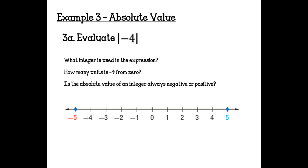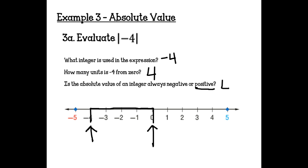Example 3: Evaluate the absolute value of negative 4. The integer used is negative 4. To find how many units negative 4 is from 0, we can graph it. Negative 4 is here and 0 is here — counting the units between them gives 1, 2, 3, 4. So they are 4 apart. The absolute value of negative 4 is 4 — and the absolute value of an integer is always positive.